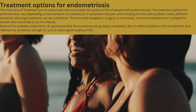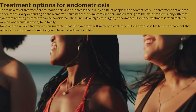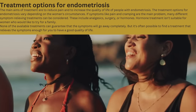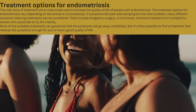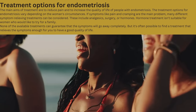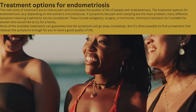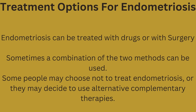Treatment options for endometriosis: The main aims of treatment are to reduce pain and to increase the quality of life. Treatment options vary depending on the woman's circumstances. If pain and cramping are the main symptoms, many different treatments can be considered, including analgesics, surgery, or hormones. Hormone treatment is not suitable for women who would like to try for a family. None of the available treatments can guarantee that symptoms will go away completely, but it is often possible to find a treatment that relieves symptoms enough for a good quality of life. Endometriosis can be treated with drugs, surgery, or a combination of both. Some people may choose not to treat it or may use alternative complementary therapies.